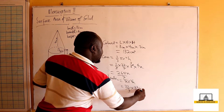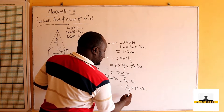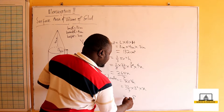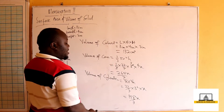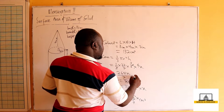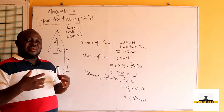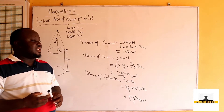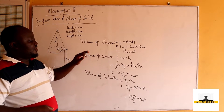The height of the cylinder is x. So we have 3 squared which is 9, times 22 over 7 times x, giving us 198x over 7 cubic centimeters. Because no material was lost, the volume of the cone plus the volume of the cylinder equals the volume of the cuboid.